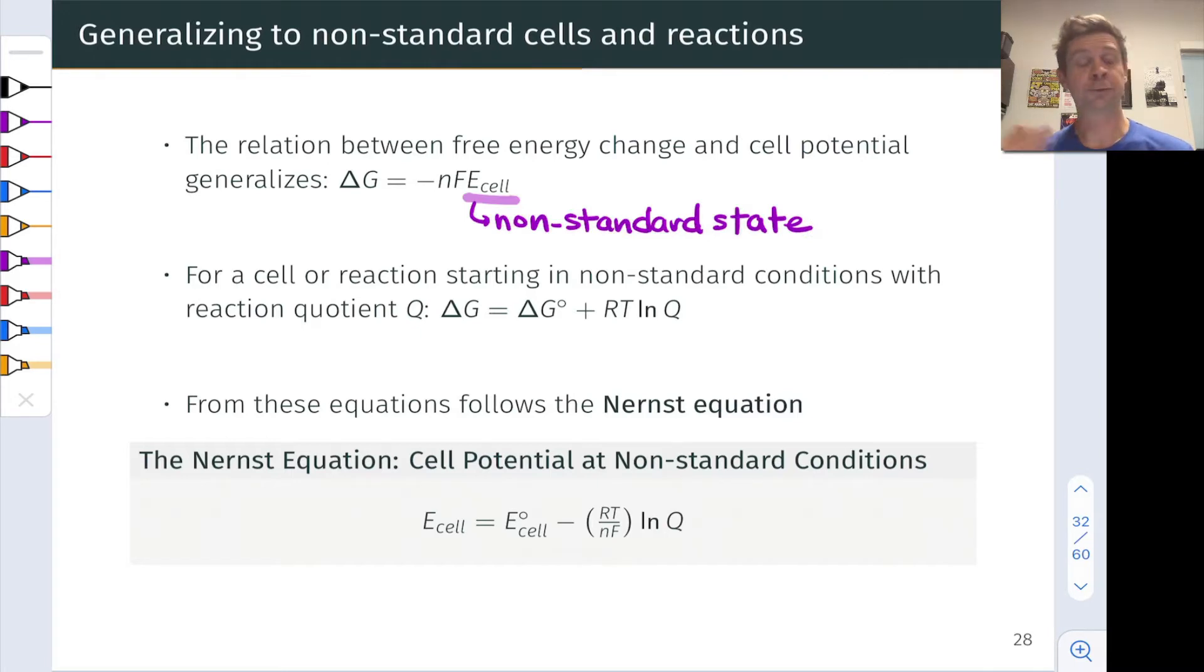So this is for a galvanic cell in a non-standard state. Now from prior discussions of chemical thermodynamics we've seen that delta G for the non-standard case is equal to the standard change in free energy plus a term related to the fact that the reaction quotient is not equal to one, the gas constant times the temperature in Kelvin times the natural log of Q.